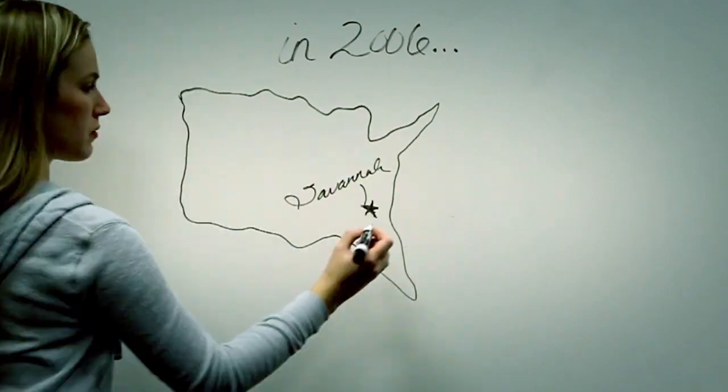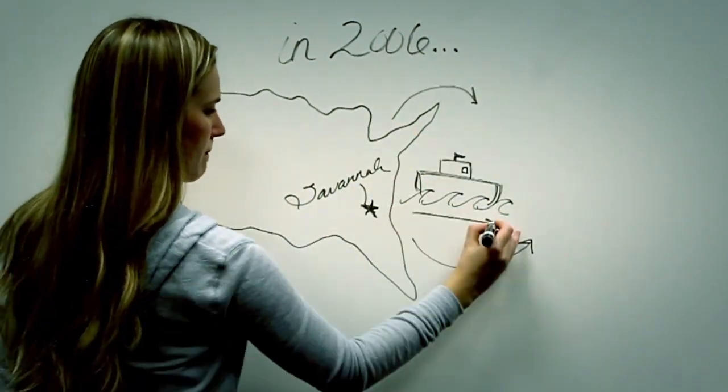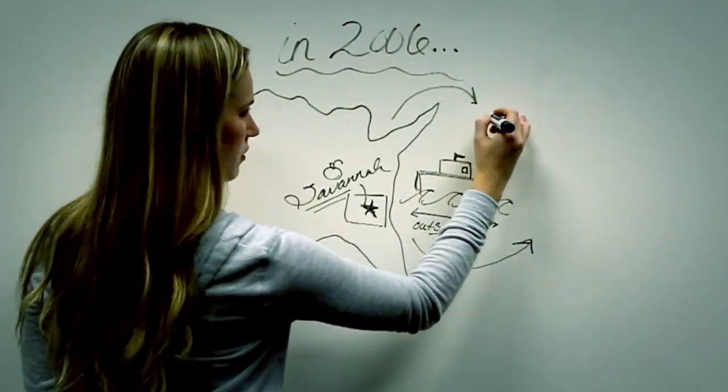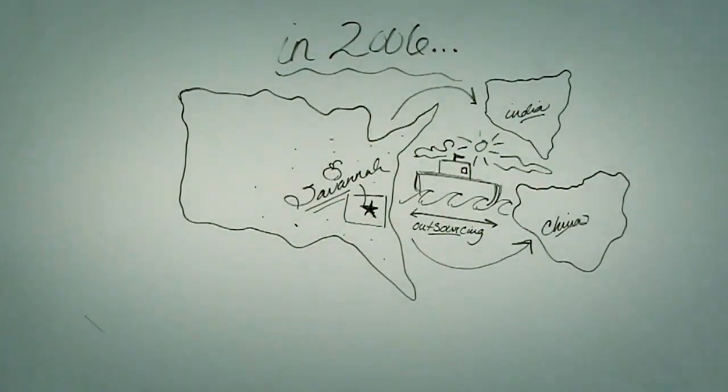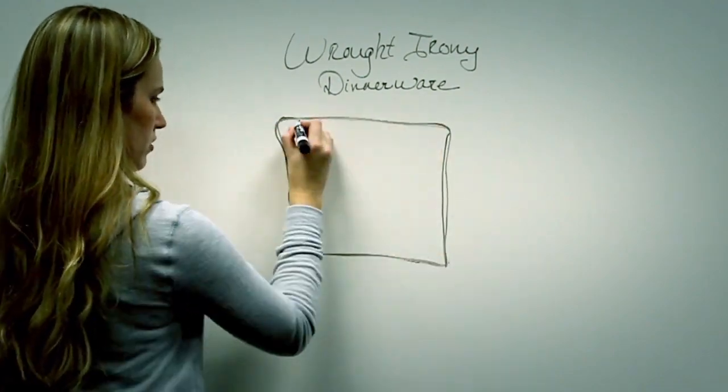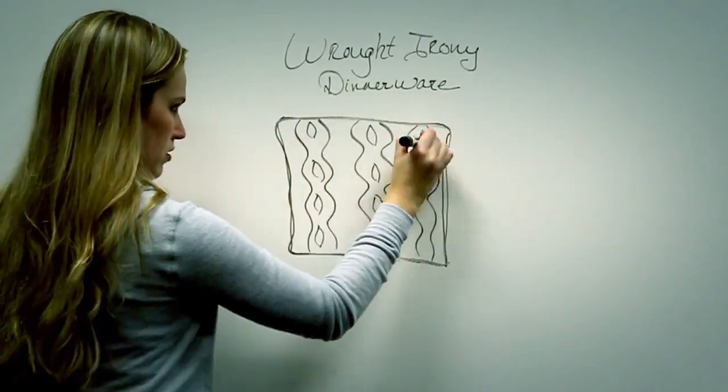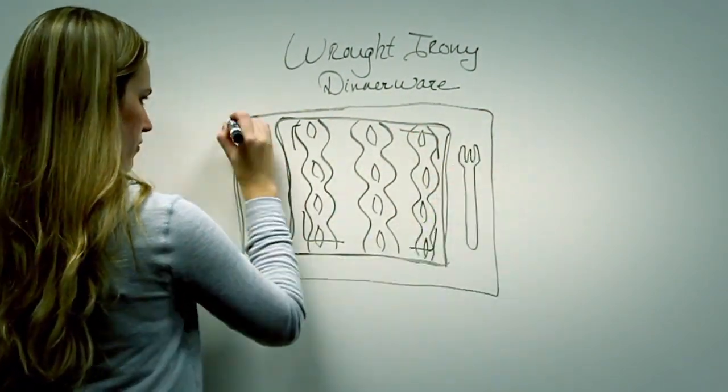In 2006, we started outsourcing some of our products to stay in competition with our competitors. Our success started growing as the Raw Irony dinnerware line grew in popularity and brought attention to us.